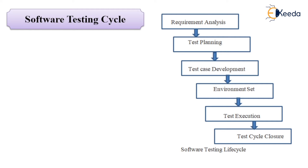Then you have test planning, which starts after the completion of requirement analysis. The activities include: preparing a test plan and test strategy, estimating the test efforts, selecting the testing approach and technique, and identifying the resources needed — roles and responsibilities of the teams under the testing process. The outcomes are the test plan document, test strategy document, testing approach, number of resources, skill persons, roles and responsibilities, along with the tools.